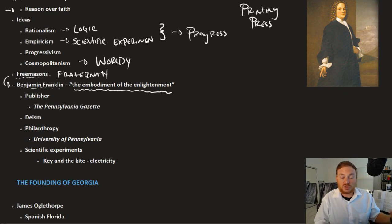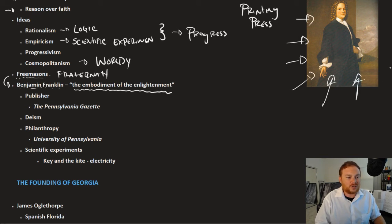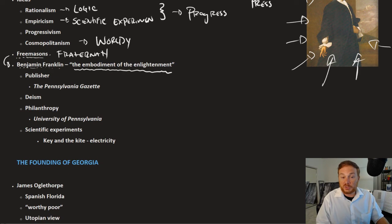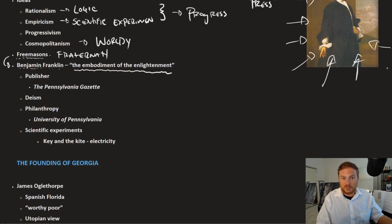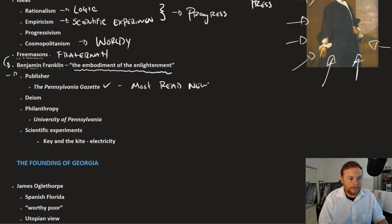He was the most popular guy in the colonies. You might say the most interesting man in the world in the 1700s. This is a picture of him when he was very young. Benjamin Franklin was born into a Puritan family, left the Puritan church like many Puritans did, moved to Pennsylvania. He worked as a publisher where he produced the Pennsylvania Gazette, which was the most read newspaper in the colonies.